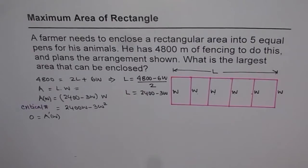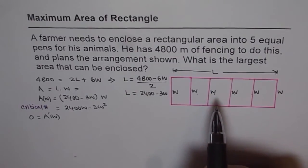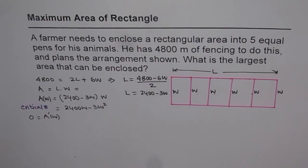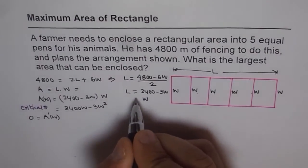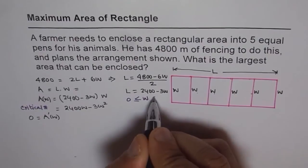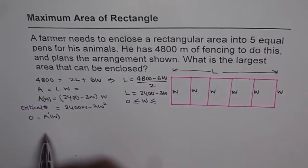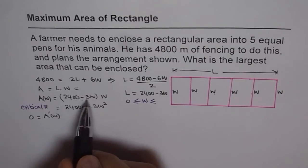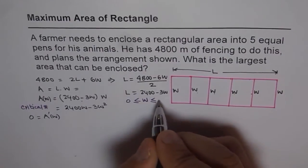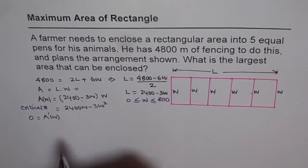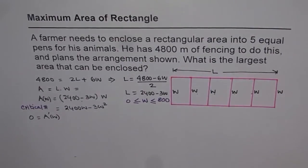We also have restrictions on W. The width W must be greater than or equal to 0. And if W exceeds 800 — since 2400 divided by 3 is 800 — then the length expression becomes negative, which is not allowed. So the boundary condition is 0 ≤ W ≤ 800.